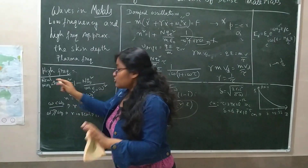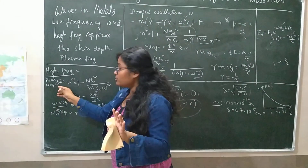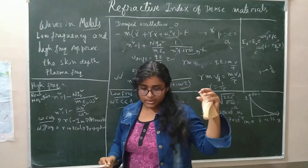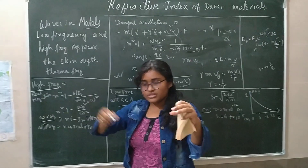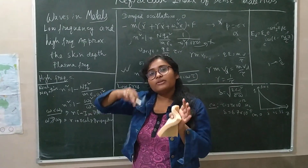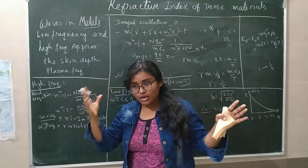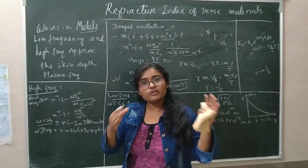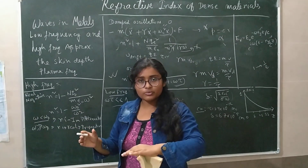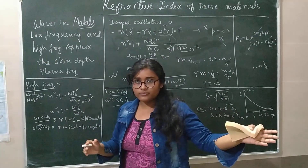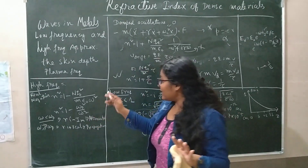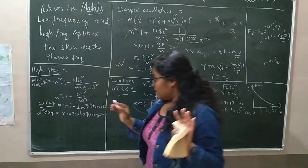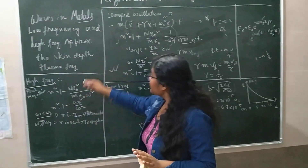In the high frequency case, the refractive index of the metal is real and negative. Real means there is no attenuation. Negative means the collective oscillation of the electrons is out of phase with the incident electromagnetic field — there is a phase shift between the incident EM wave and the collective oscillation of the electrons, so their radiated wave is out of phase with the applied incident wave.